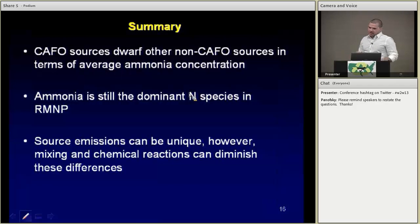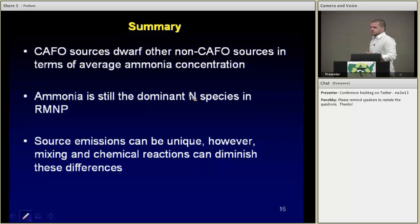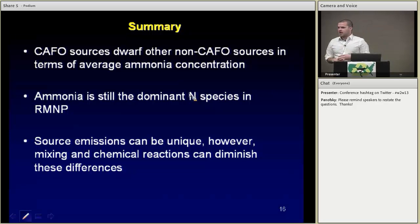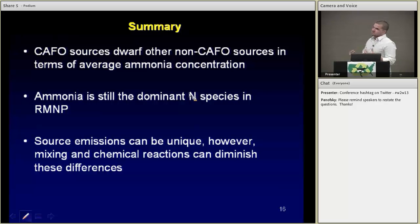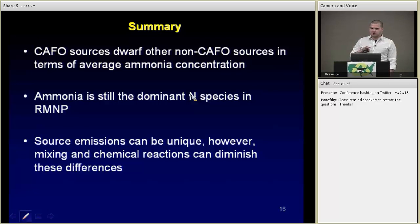In summary: CAFOs dwarf all other sources in terms of average ammonia concentrations, as expected. Ammonia is still the dominant form in Rocky Mountain National Park, so it will continue to be an area of high concern and study. Source emissions can be unique enough to possibly use as tracers; however, on this regional scale, mixing and chemical reactions can diminish those differences. Depending on how long air sits before it's deposited or scavenged in the park, those source fingerprints can be lost — so you're somewhat at the mercy of the environment when trying to do source fingerprinting.